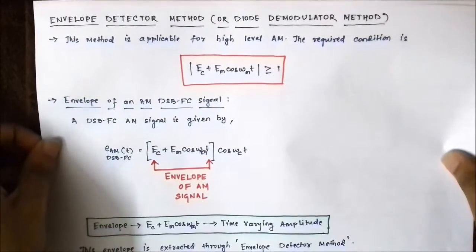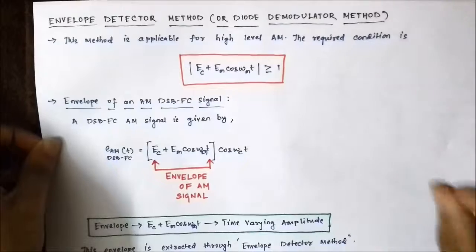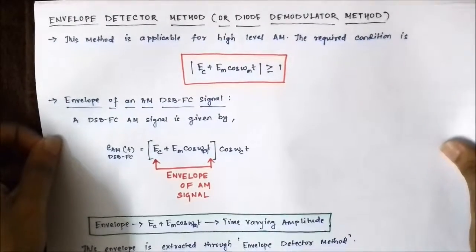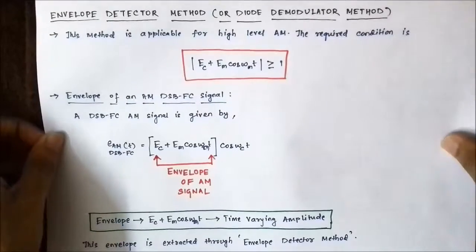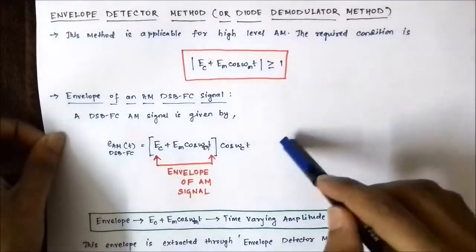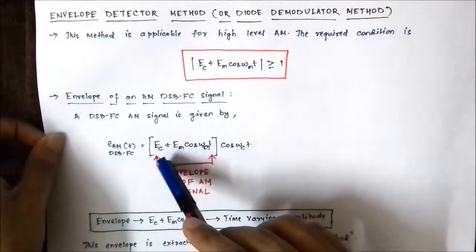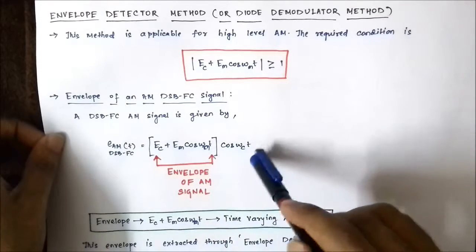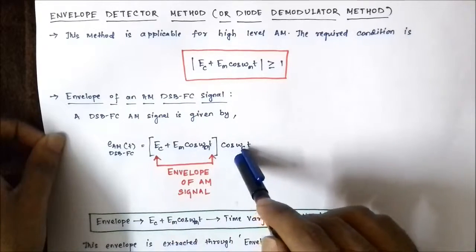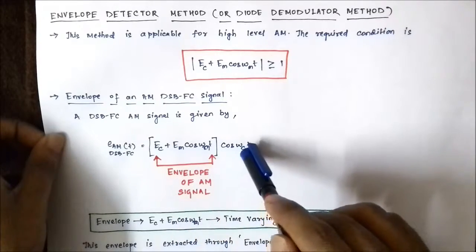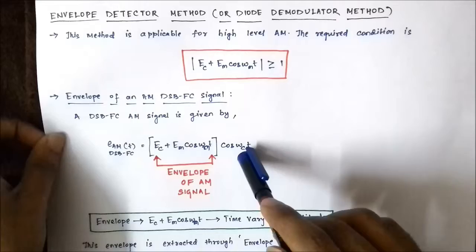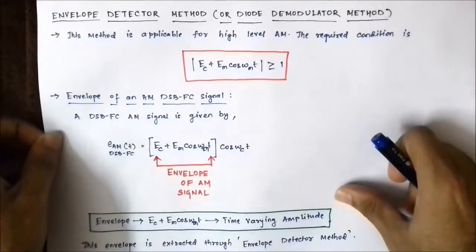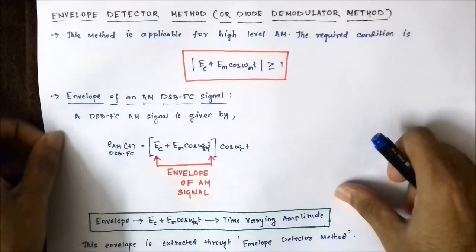Before going deep into the working principle, block diagram, and circuit diagram of this method, we need to understand what the envelope of an amplitude modulated signal is. We know that a double sideband full carrier signal is given by the expression (EC + EM·cos(ωm·t))·cos(ωc·t). Opening the bracket gives EC·cos(ωc·t) plus EM·cos(ωm·t)·cos(ωc·t), which is the carrier signal plus the double sideband suppressed carrier signal consisting of both sidebands.